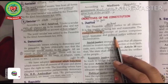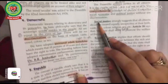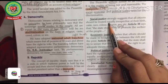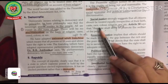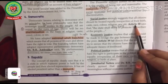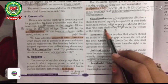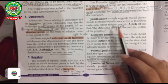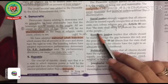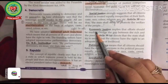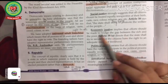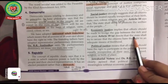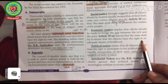Social justice strongly suggests that all citizens should be treated equally, irrespective of birth, caste, race, color, religion, sex, etc. Article 38 says the state shall strive — meaning try hard — to promote the welfare of the people. Economic justice implies that efforts should be made to bridge the gap between the rich and the poor. Article 39A directs that the state should try to secure that all citizens have the right to an adequate means of livelihood.